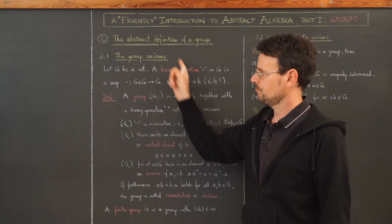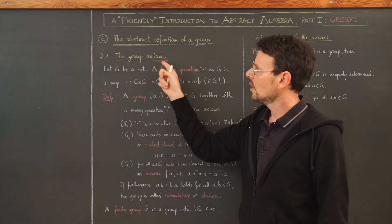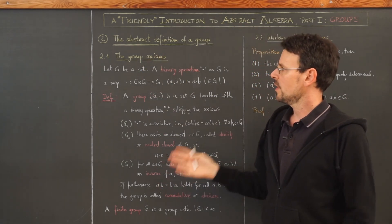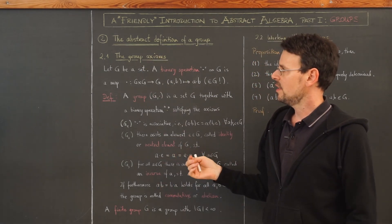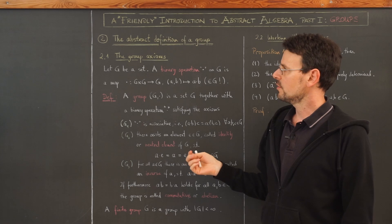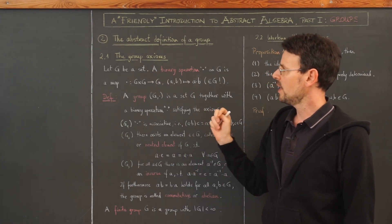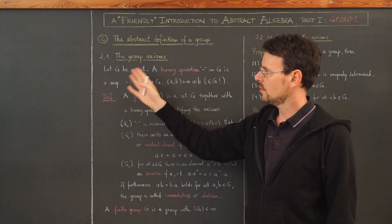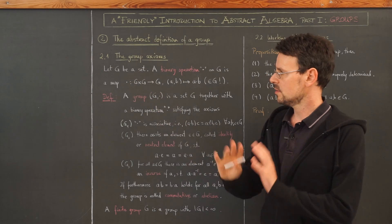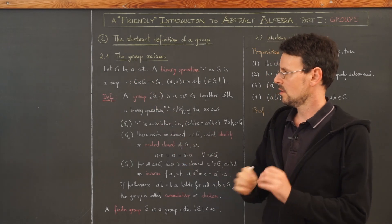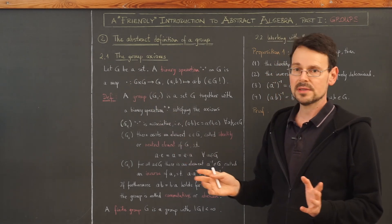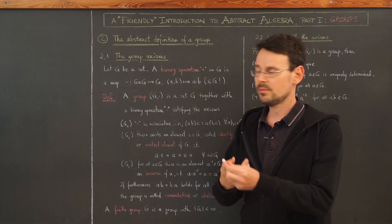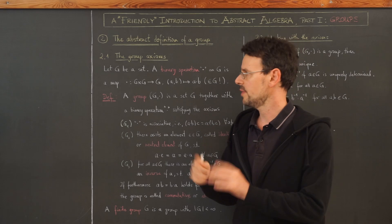Here is the general abstract definition of a group, by writing down the group axioms. We're not referring to any specific examples like groups of symmetries, permutations, or matrices.